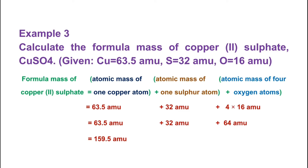Example 3: Calculate the formula mass of copper(II) sulfate, CuSO4. The element symbols and their atomic masses in AMU are taken from the periodic table.